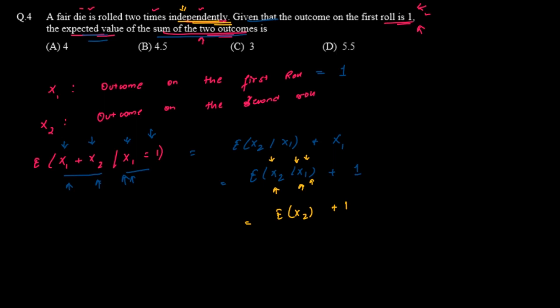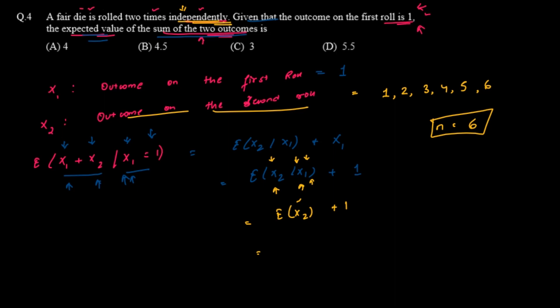Now we find E[X2]. The possible outcomes on the second roll are 1, 2, 3, 4, 5, or 6 — six equally likely outcomes. So E[X2] = (1+2+3+4+5+6) / 6 = 21/6 = 3.5.